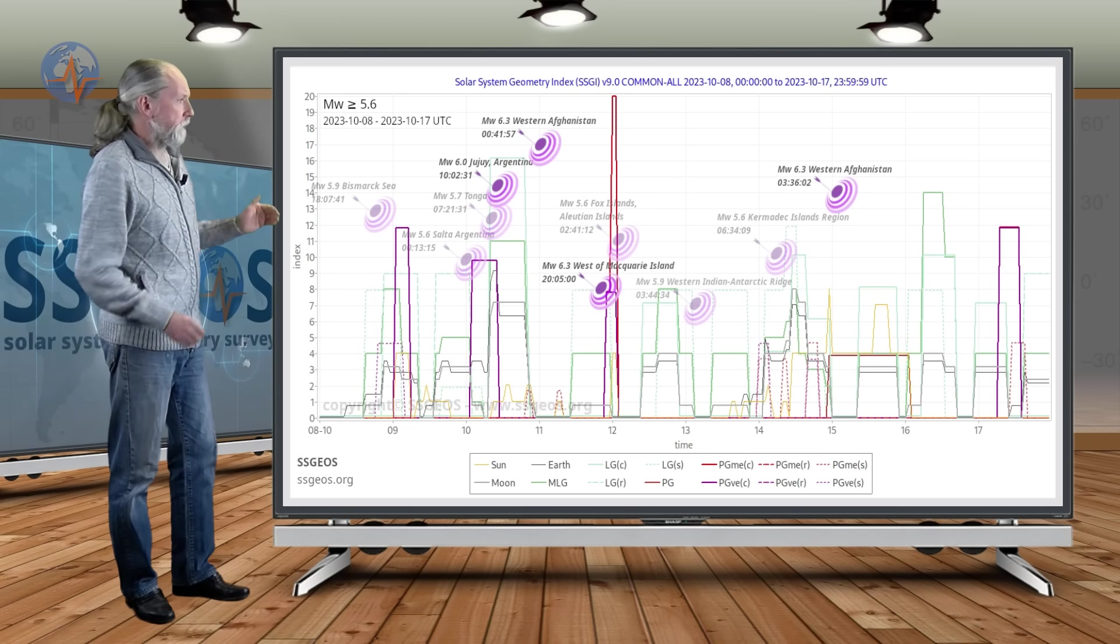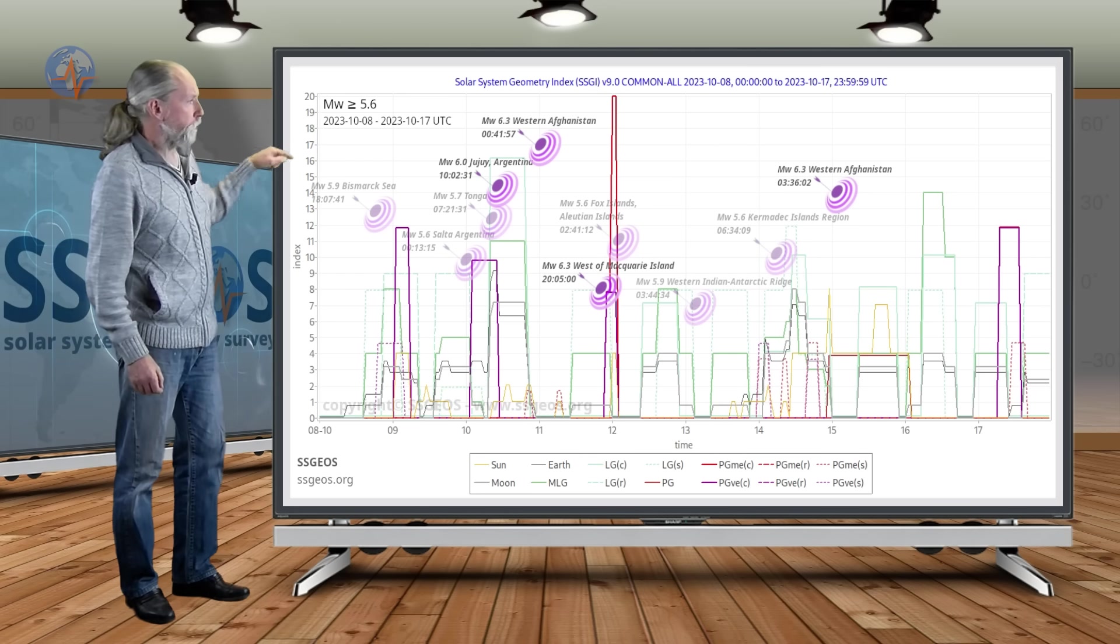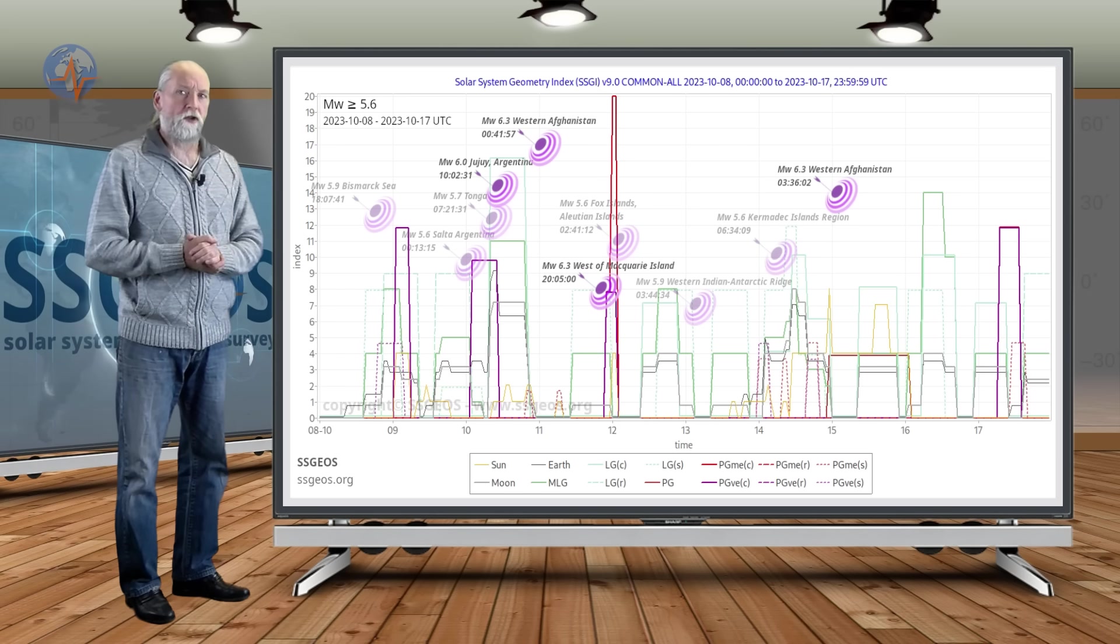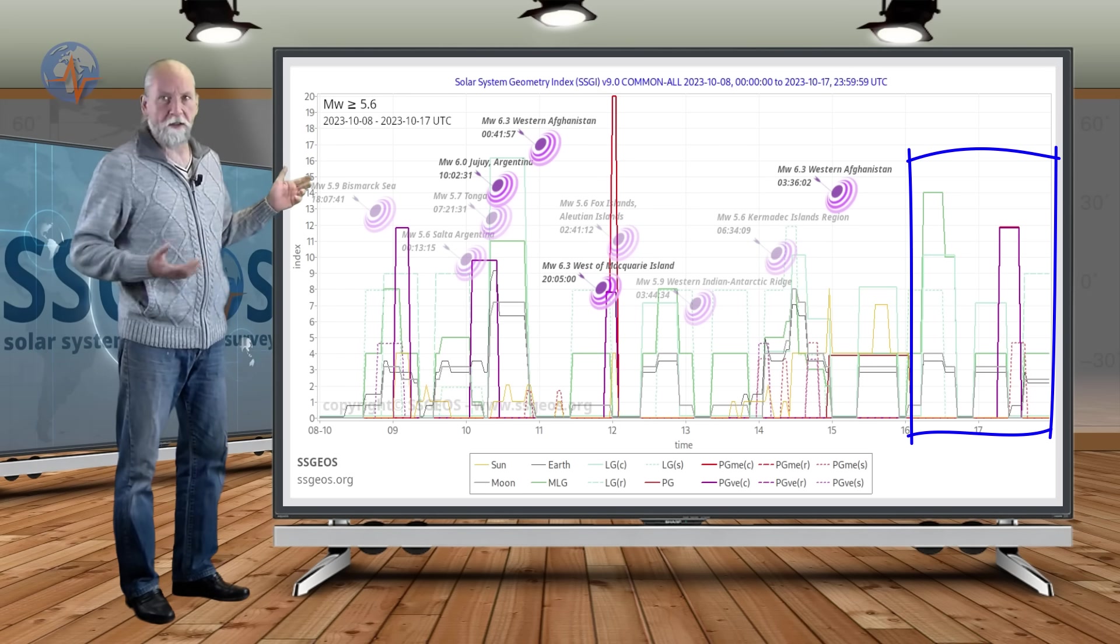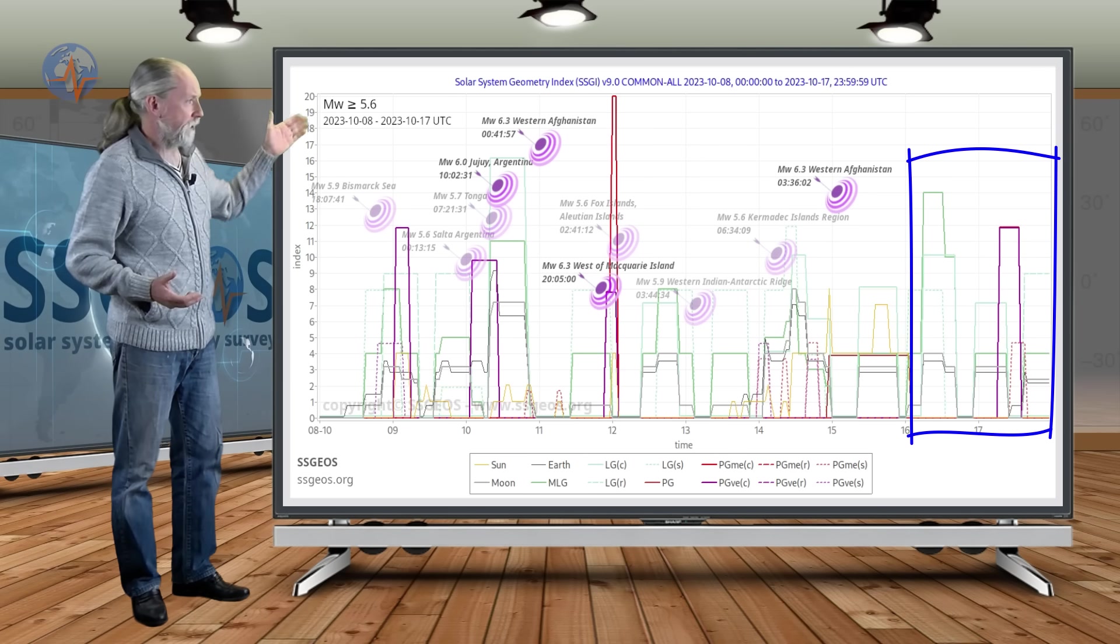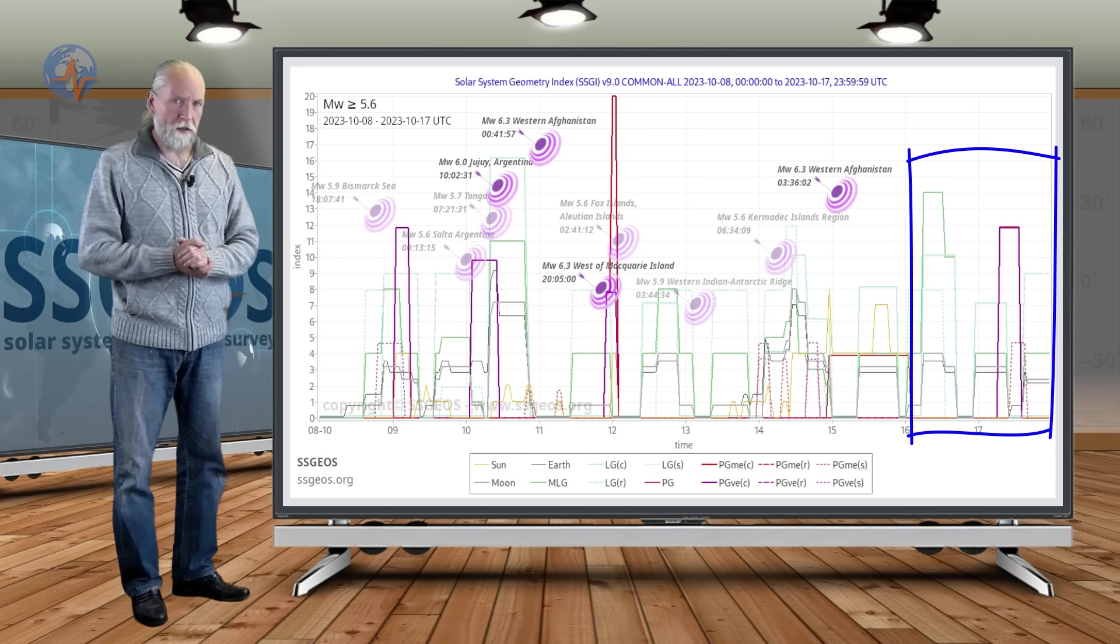Okay, and also what you do not see here on the SEGI graph is additional strong tremors 6.4 that occurred actually this morning at the Aleutian Islands at the time of the high lunar peak.